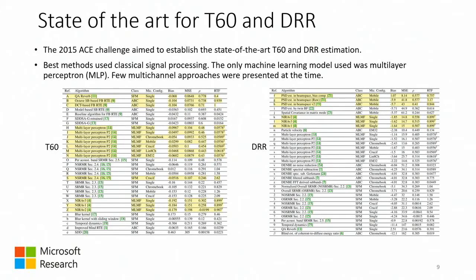At the beginning of this internship, we started looking at T60 and DRR, thinking maybe we could improve on past work. These are the results of the ACE challenge in 2015. Back at the time, most methods were signal-based with not much machine learning in spatial audio. The best results were achieved by signal processing methods, with octave spectral band-based algorithms being the best performing.